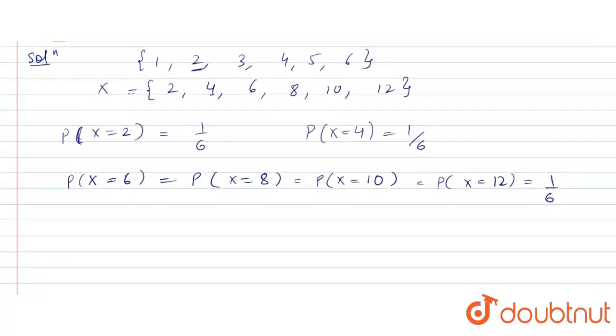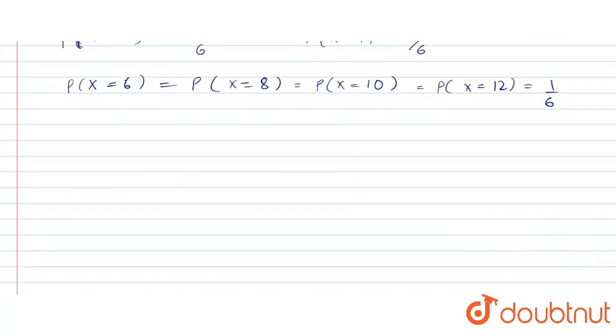Now, the mean. Mean is the expected value. So, the expectation of x is sigma x i multiplied by the corresponding probabilities. Every probability is 1 by 6, so I can take 1 by 6 out common and it will be sigma x i.